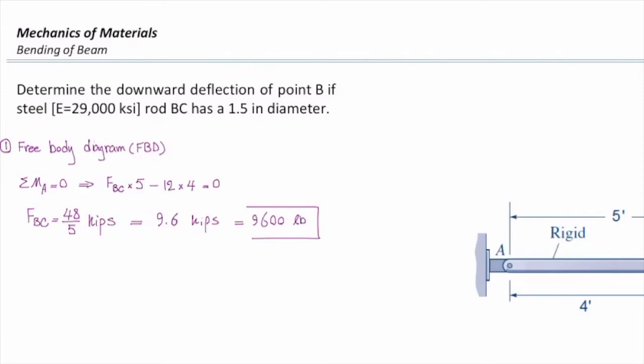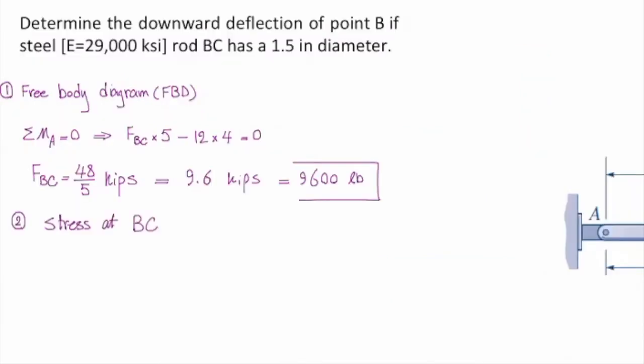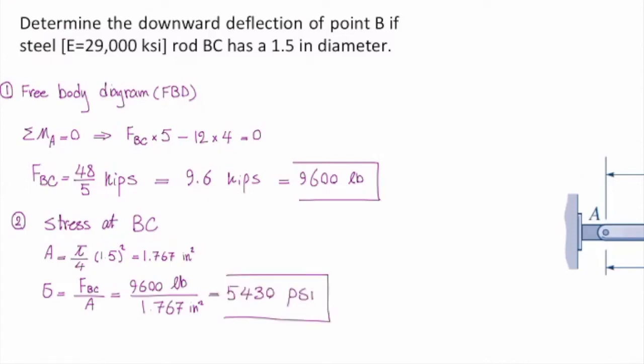Now, I want to determine how much is stress in that element. How can I do that? I simply need to divide this force by area. So I need to determine area of that rod. The diameter is given, and I can simply determine area as pi over 4 times diameter squared, which is equal to 1.767 square inches. And stress would be force over area. That gives me 9,600 pounds divided by 1.767 square inches. And that gives me a stress equivalent to 5430 psi.